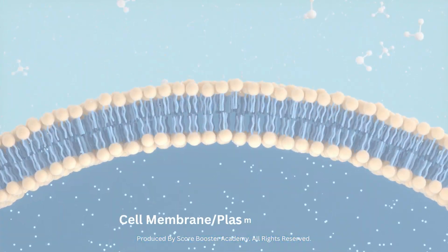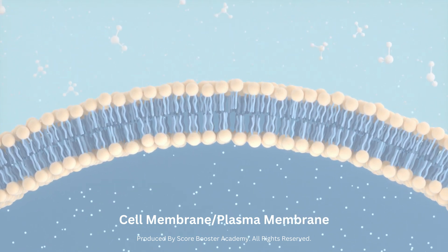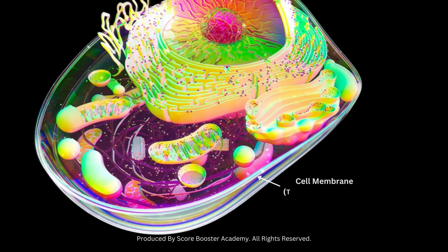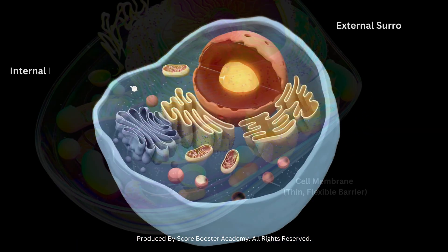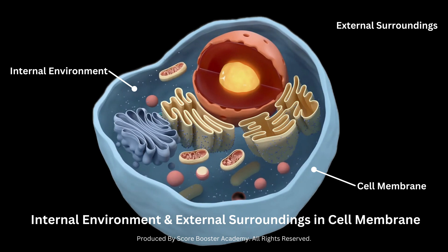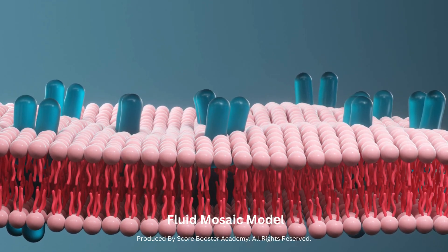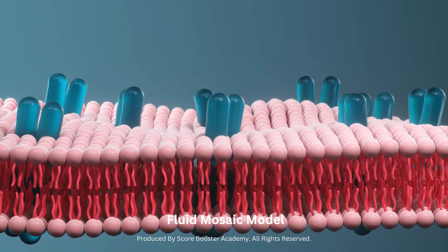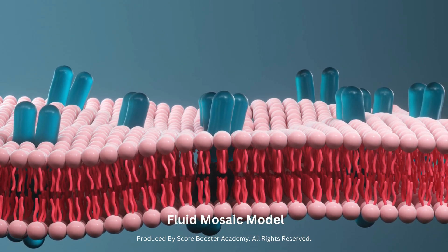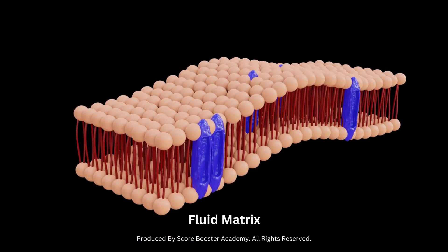The cell membrane, also known as the plasma membrane, is a vital component of all living cells. It is a thin, flexible barrier that separates the internal environment of a cell from its external surroundings. The fluid mosaic model is a widely accepted model that describes the structure and organization of the cell membrane. According to the model, the cell membrane is not a rigid structure but rather a fluid matrix.